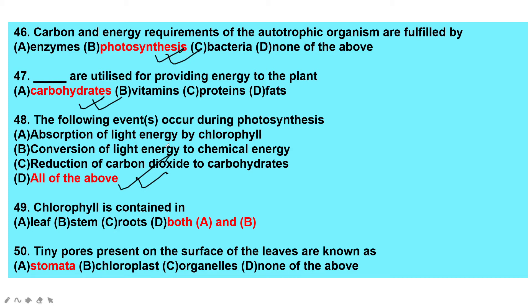Chlorophyll is contained in — leaf, stem, roots, or both A and B? It is leaf and stem both. Most children get confused and choose only leaf, but stem also contains chlorophyll.